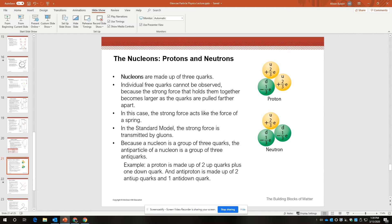So an antiparticle of a nucleon is a group of three antiquarks. So the proton, two up and one down, has an antiproton.